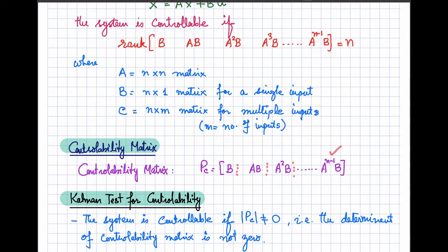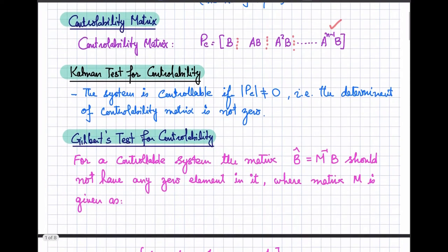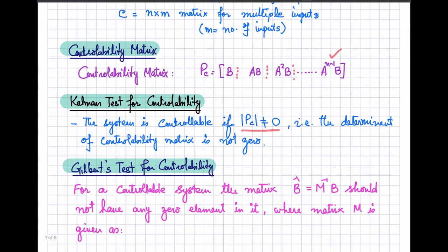The concept of controllability was first introduced by Kalman, and later Gilbert also contributed to it. We will discuss two methods to determine controllability: the Kalman method and the Gilbert method. According to Kalman, the system is controllable if the determinant of the controllability matrix is not zero — meaning the controllability matrix is not singular. If this determinant is not equal to zero, your system is fully controllable.